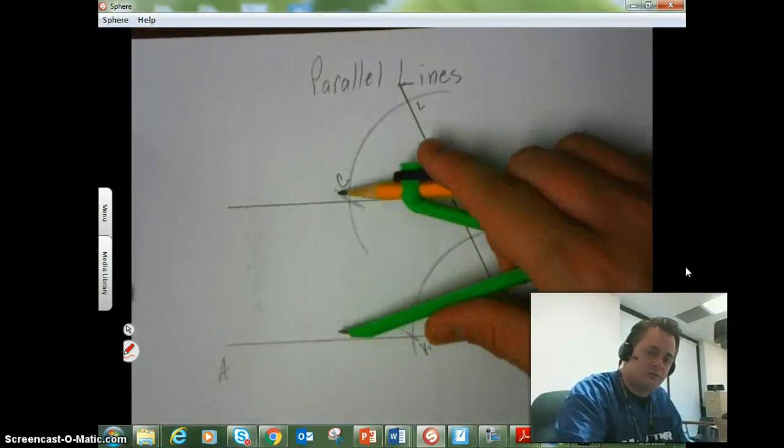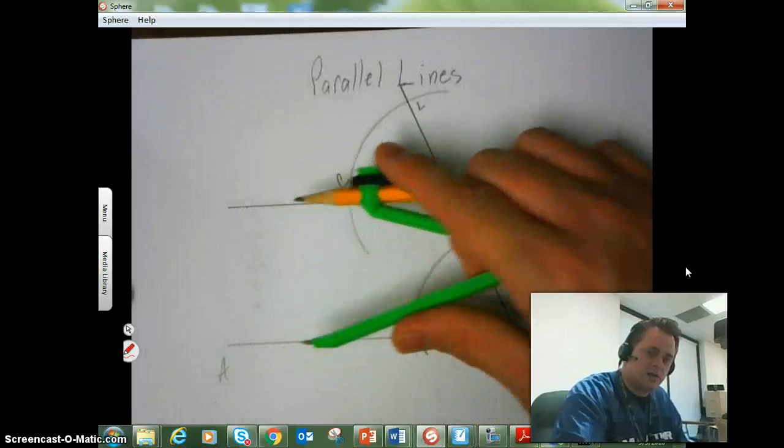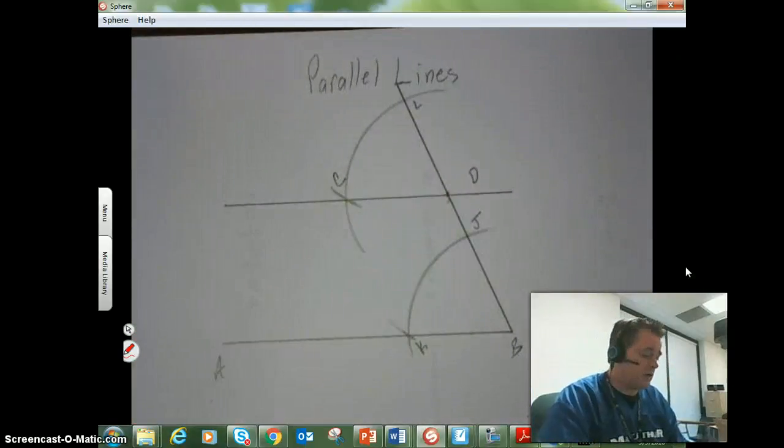The distance between the pencil and the point of the compass isn't changing. So you can see that the distance between these two line segments, AB and CD, is the same. So that looks to me like they are relatively parallel to each other.